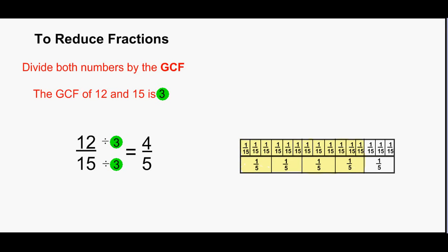The diagram shows in the upper rectangle 12 fifteenths shaded in, and beneath it I have shown fifths, where 4 fifths has been shaded. Notice that they are shaded the same amount in each rectangle, showing that they are of equal value.